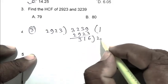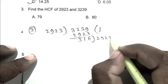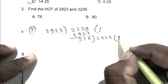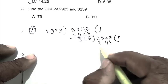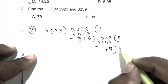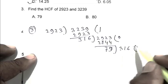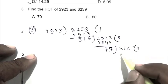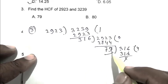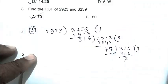We divide 2923 by 316. 316 goes into 2923. We divide it 4 times, and the HCF is 79. So A is the right answer.